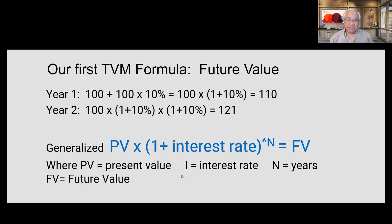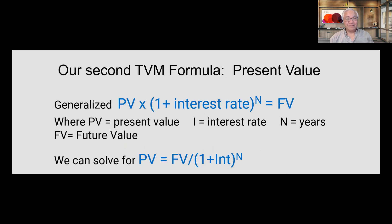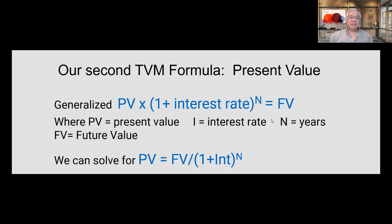We're not quite done yet. We can take that future value expression and solve it for PV instead of FV. So we get: PV equals FV divided by (1 plus the interest rate) raised to the power of time. From one equation, we now have two different expressions — one to tell us what money is worth in the future, and the other to give us the present value of a certain amount of money received at a future point in time.